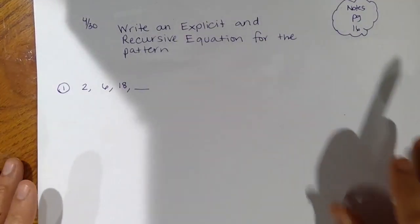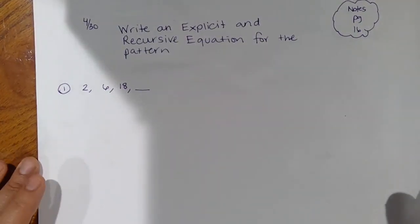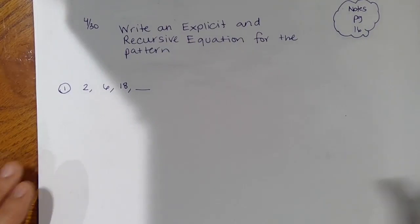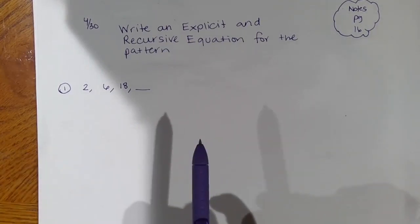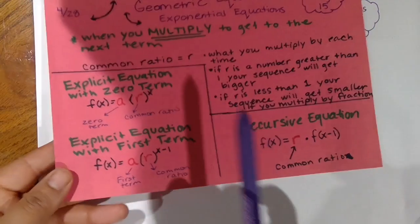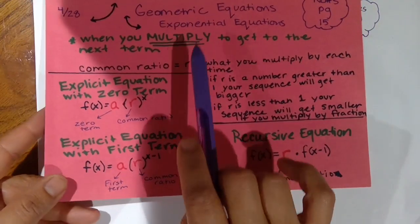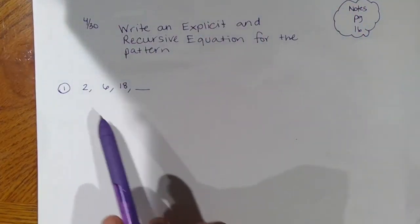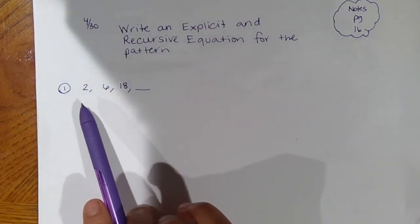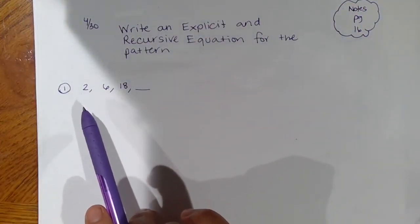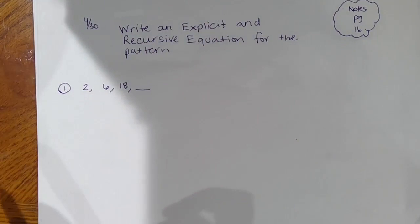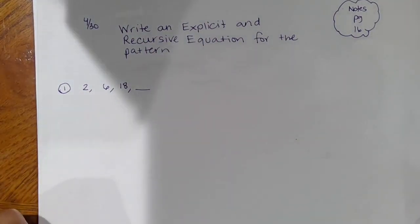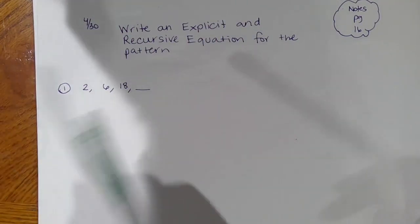Today's notes are page 16. We're going to look at patterns and then write explicit and recursive equations. First, we have to see how the pattern is growing. We had only done linear before, but now we have to see that this is actually growing differently.